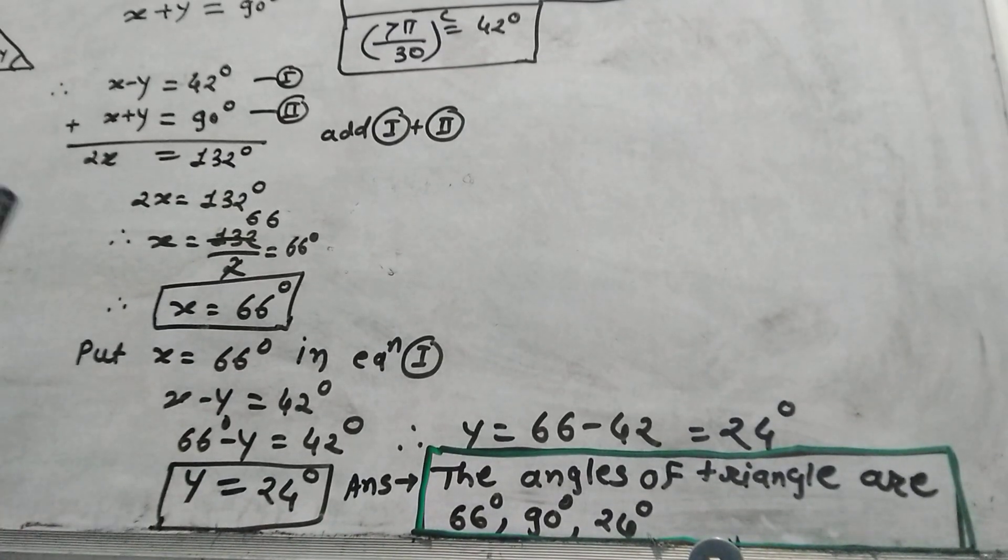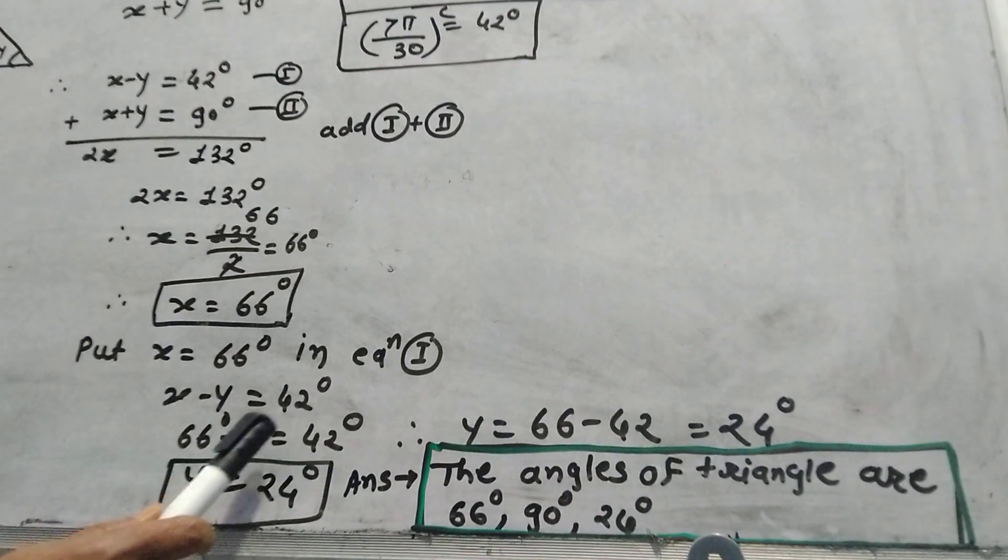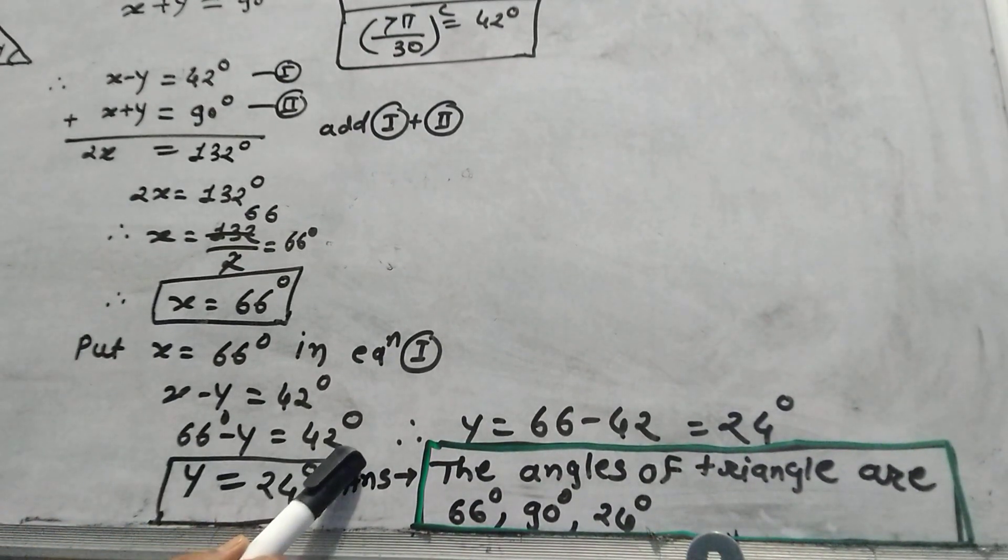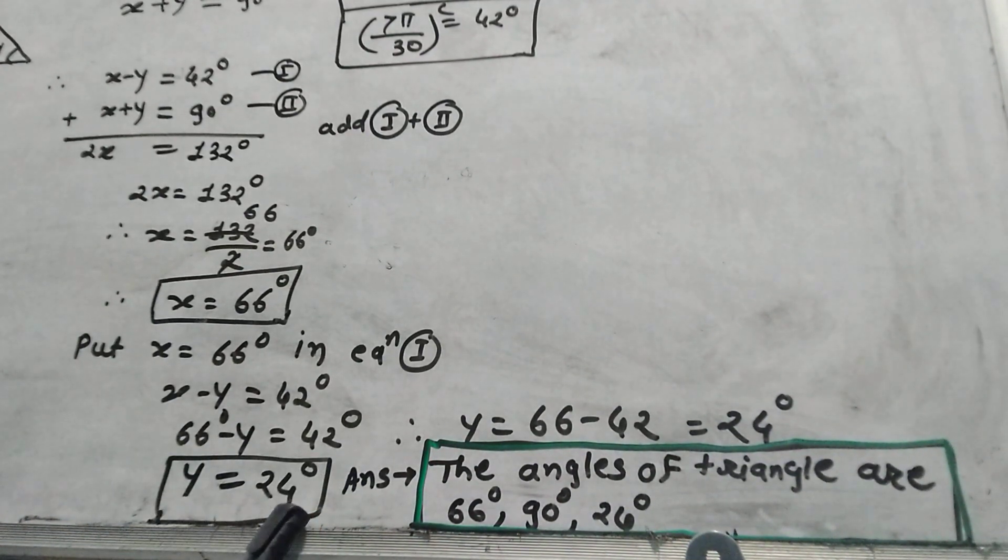Put the value of x in the equation. x minus y equals 42, so 66 minus y equals 42 degrees. Therefore, y equals 24 degrees.